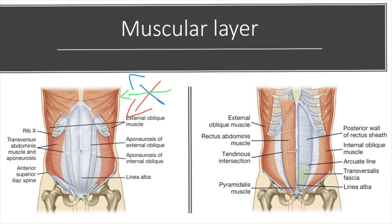Now for the two vertical muscles. The first is the rectus abdominis — a paired muscle, one on each side of the body, separated vertically by the linea alba, which is where all the aponeuroses intersect at the midline. Horizontally, the rectus abdominis is also split by transverse fibrous bands called tendinous intersections, giving it the six-pack appearance visible in muscular individuals. The second vertical muscle is the pyramidalis, a small triangular muscle anterior to the rectus whose base sits on the pubis and attaches to the linea alba. Not everyone has a pyramidalis muscle.